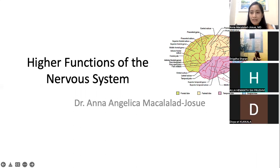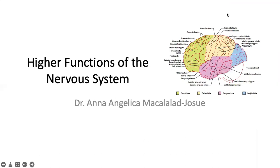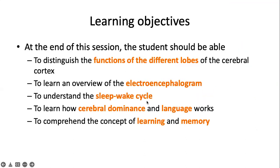I think this is the last lecture for your module on the nervous system. At the end of this session, you should be able to first distinguish the functions of the different lobes of the cerebral cortex, learn an overview of the electroencephalogram — just as the heart has the electrocardiogram, the brain also has an electroencephalogram — understand the sleep-wake cycle, learn how cerebral dominance and language works, and comprehend the concept of learning and memory.